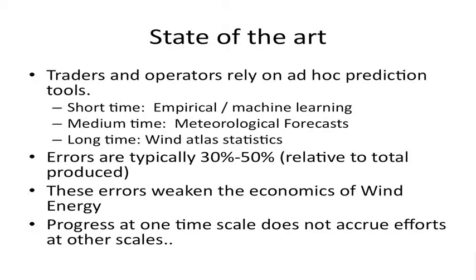These errors weaken the economics and the tipping point for where wind energy can move in. The other problem with this current state of the art is that progress on any one of these time scales is not going to accrue to the others, because they're ad hoc and dealt with separately. We're trying to work across all of them.